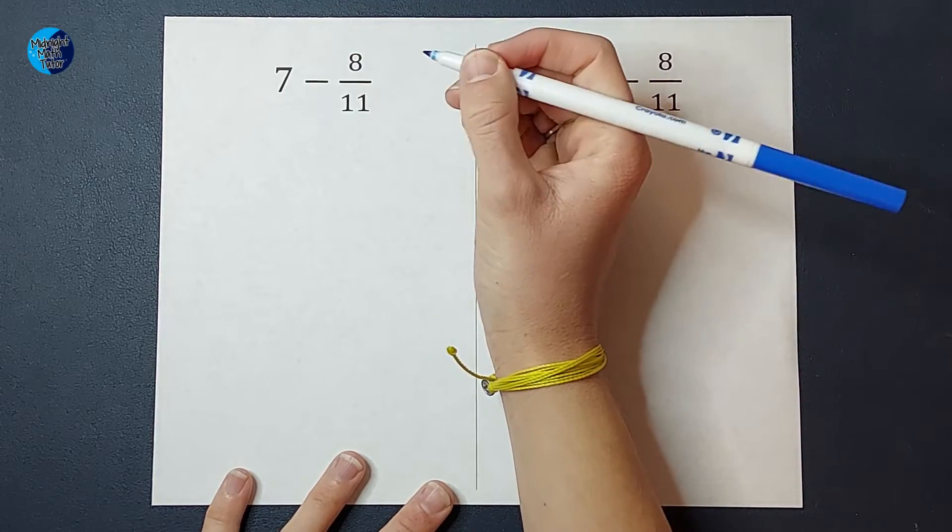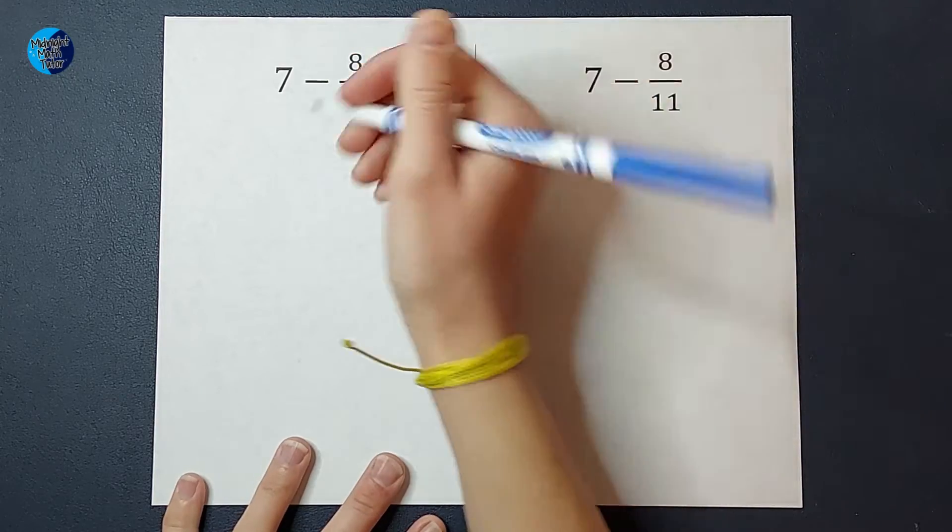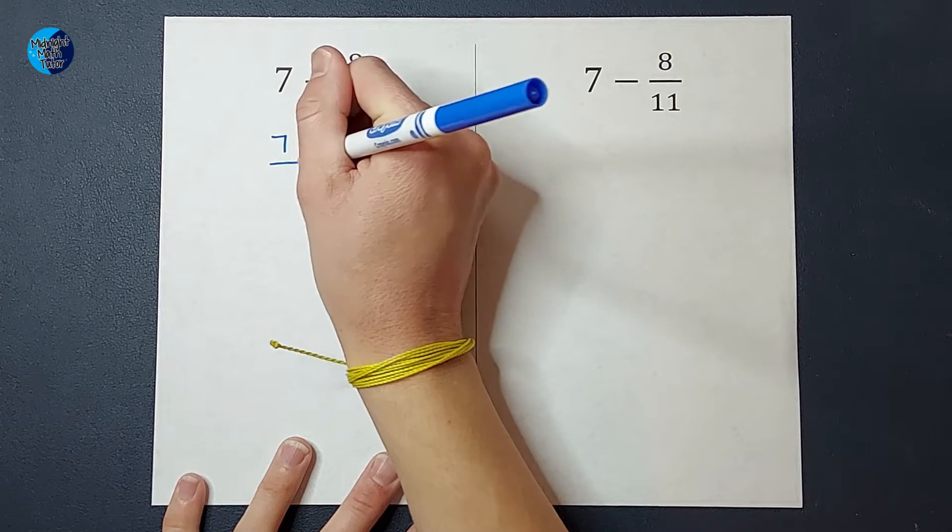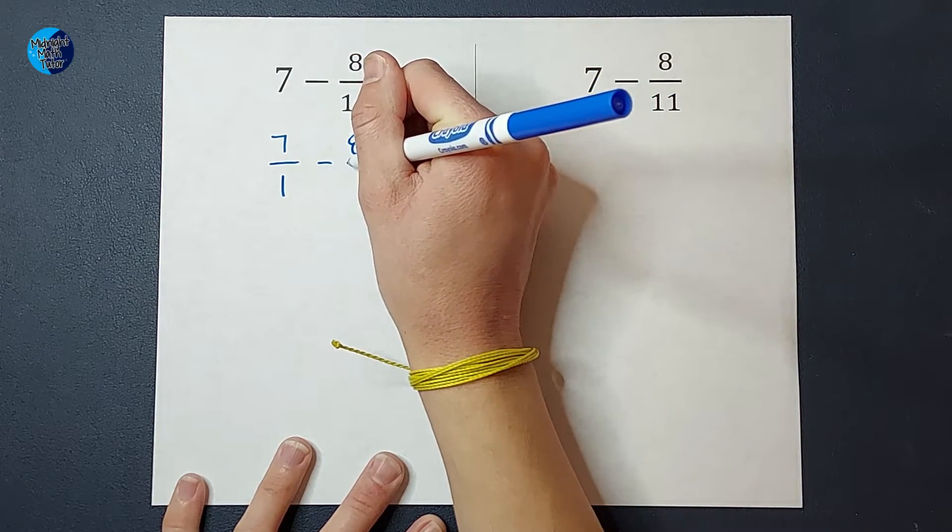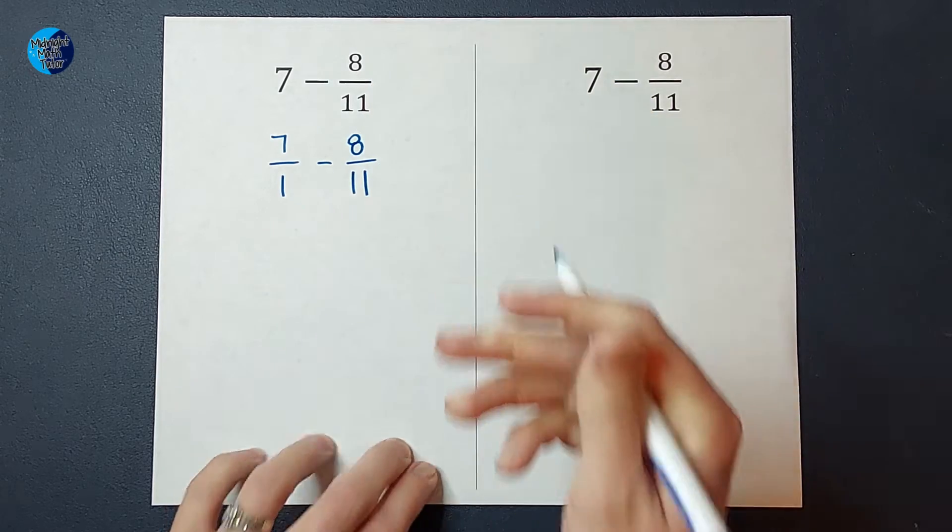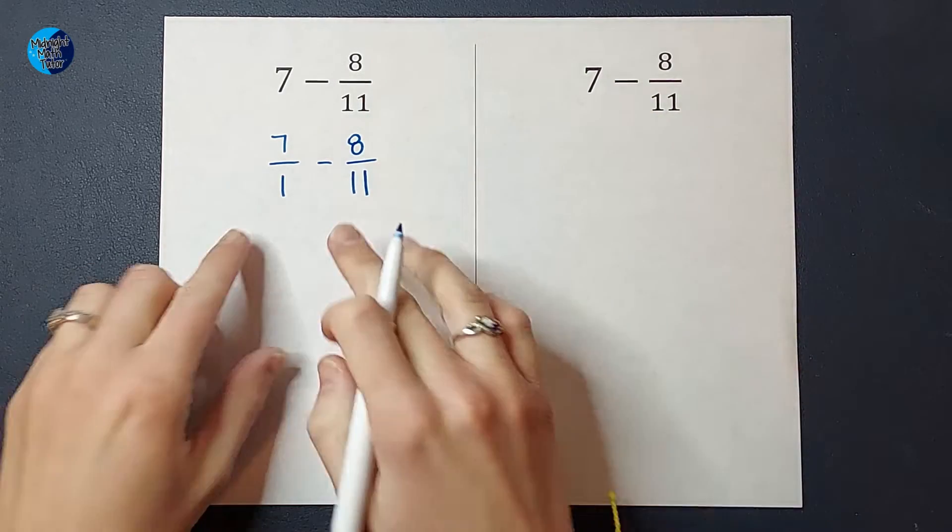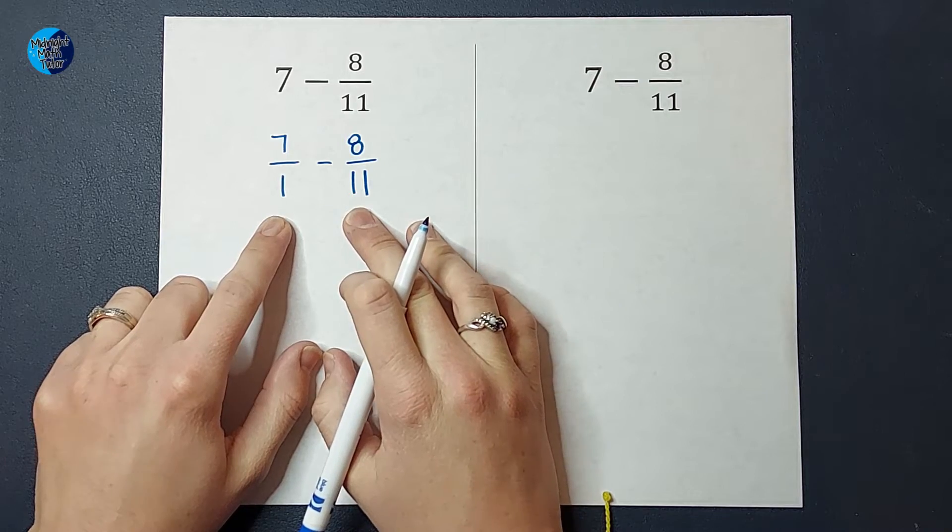So right now you might be thinking, well, seven doesn't have a denominator, but it's always over a one, even if it's not written. So we have seven over one minus eight elevenths. Then I want to get my denominator the same. So the smallest number they both go into is 11.